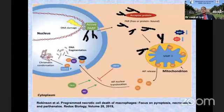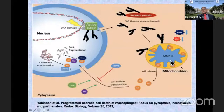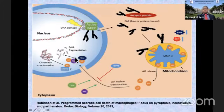This is an illustration of PARP2 where active PARP releases the PARP polymer, which causes relocation of MIF and AIF back to the nucleus to produce DNA fragmentation.